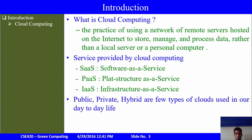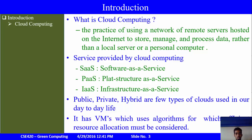There are many types of clouds available, majorly public, private, and a combination of both known as hybrid. On the backend of cloud computing are virtual machines, which use resource allocation algorithms.